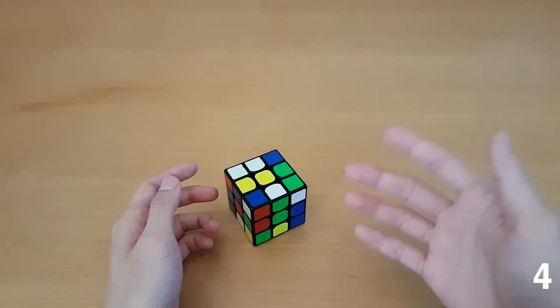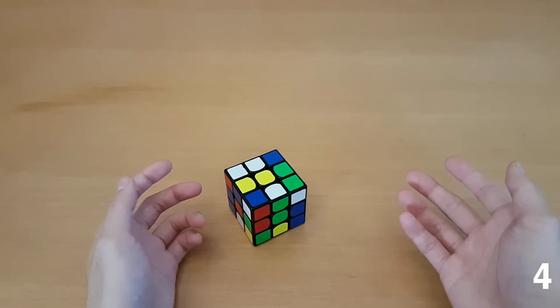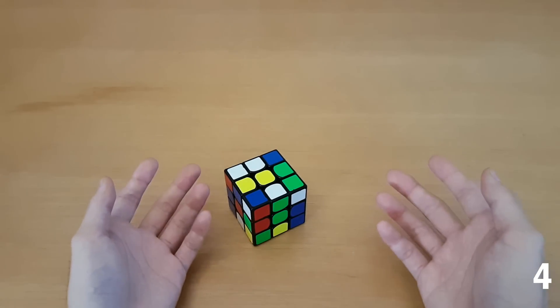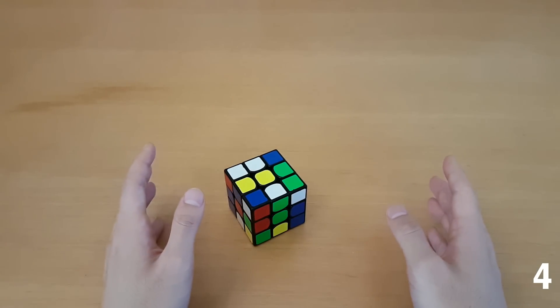Misconception number four, you have to be color neutral to be good. So Felix and Max Park are color neutral but there are examples of people who are not color neutral and are still really good. So if you're looking for excuses for why you're not good it probably has nothing to do with color neutrality.